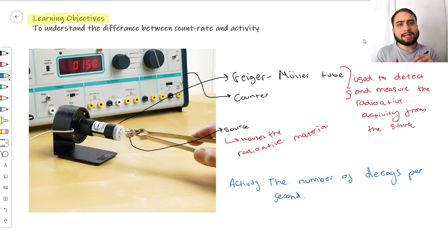Decaying means going from an unstable state to a stable state by releasing some radioactive particles - either alpha, beta, or gamma.